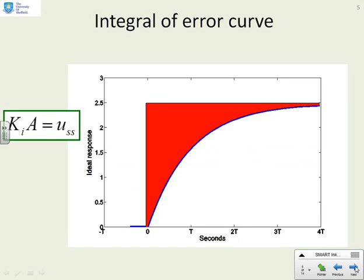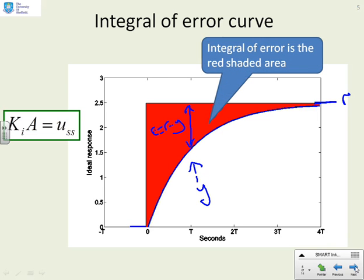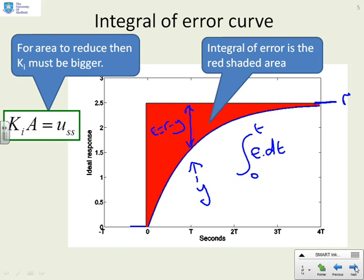Here's a demonstration. You'll see we've given a response in this blue curve, and the red bit shows the area of the error curve. So, if this blue bit is y, and this top line up here is r, then clearly this value in here is e equals r minus y. So, the red shaded area is the integral of the error. Or if I write it in full, the integral of e dt, starting from 0 to t.